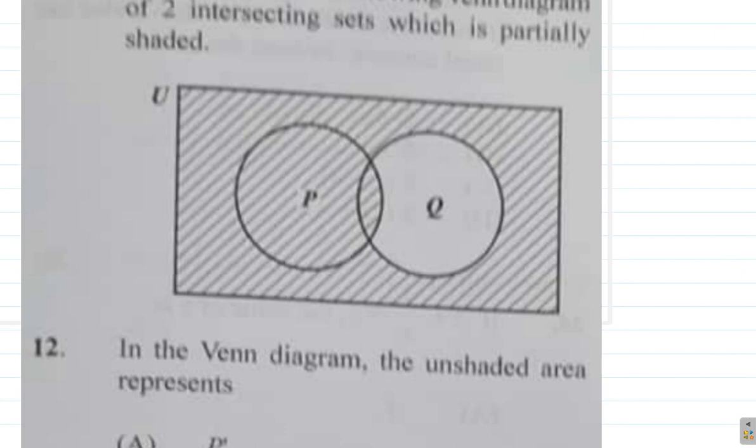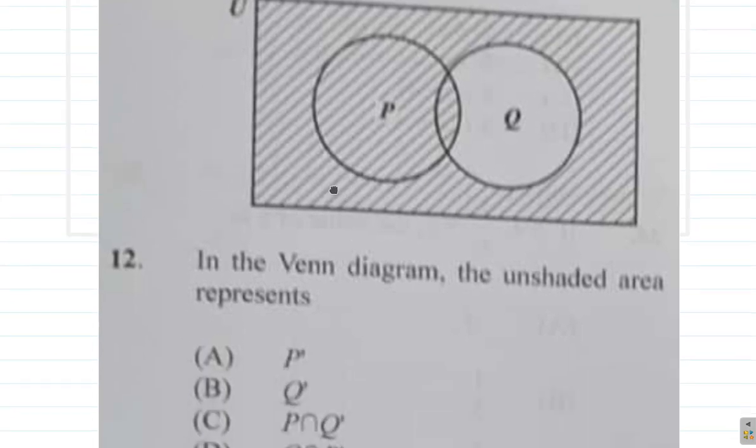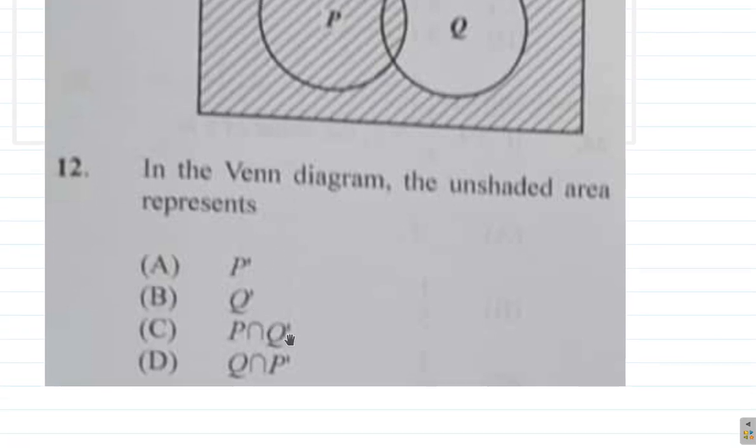Is it Q complement? If you shade Q complement, it means what is outside of Q, and here this should not be shaded if you shade Q complement. So B is not it. Let's see what happens here—P intersect Q complement. Q complement would be all of these.